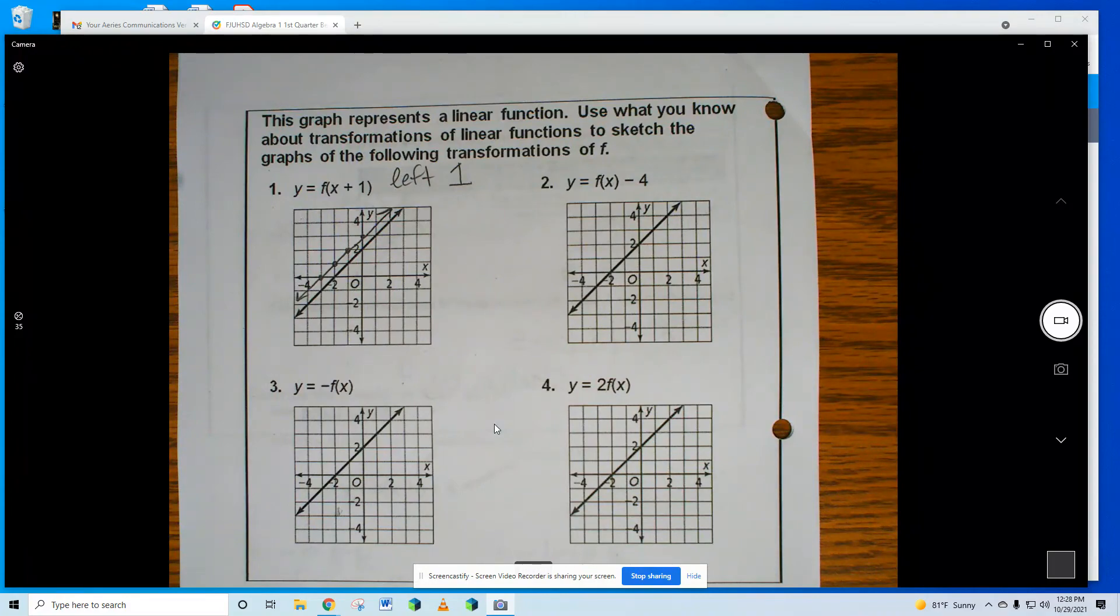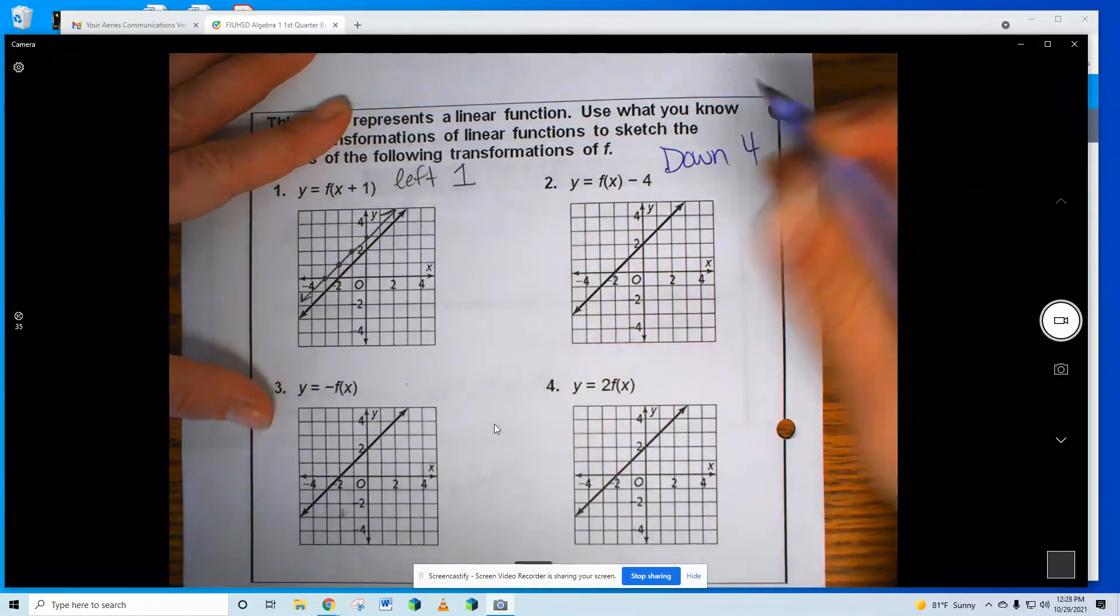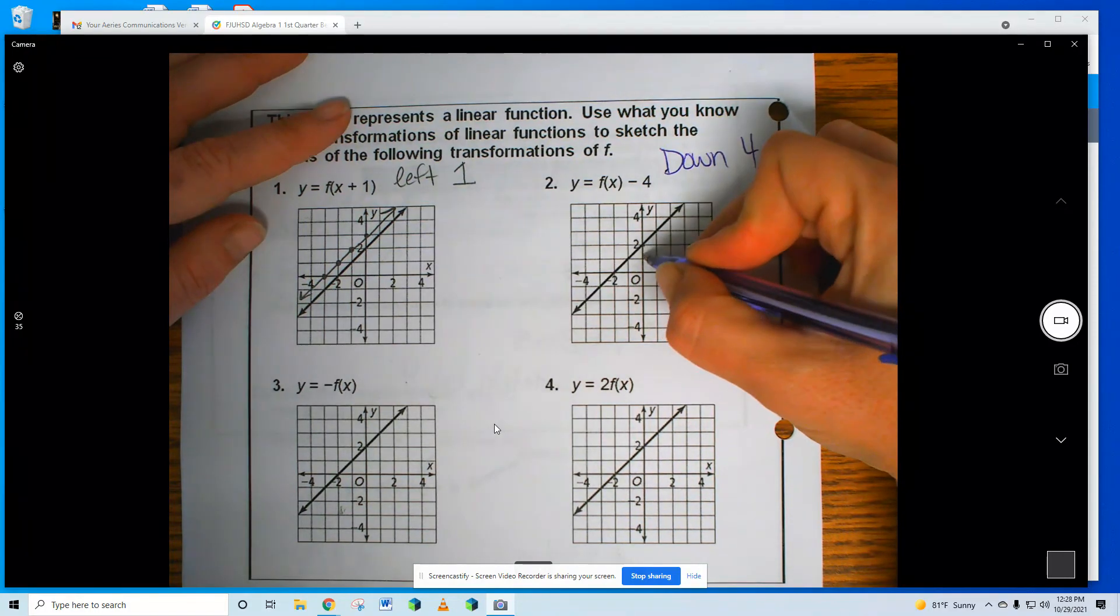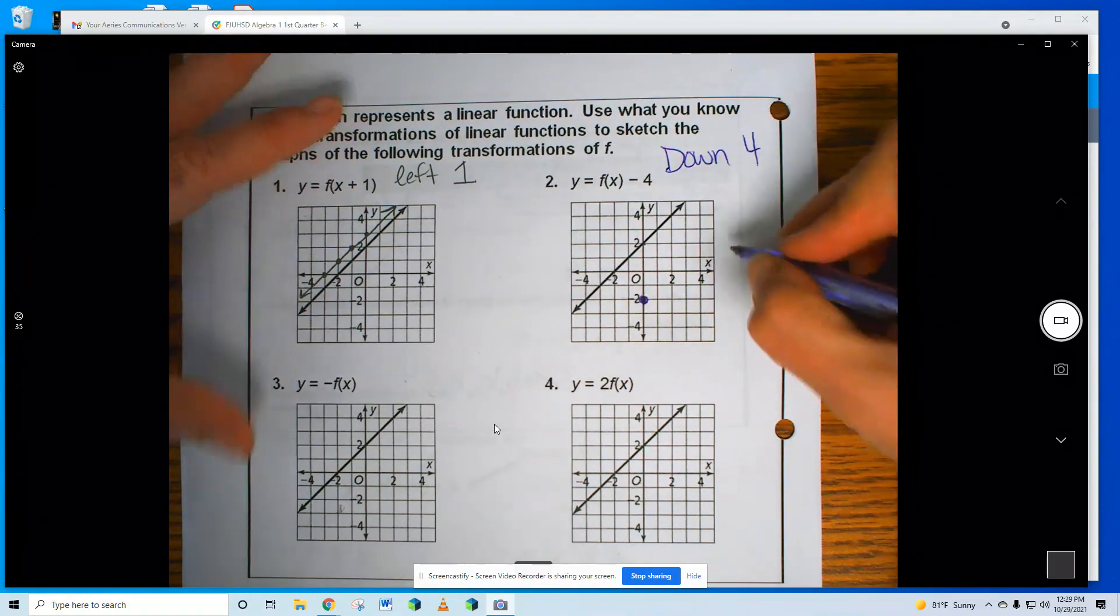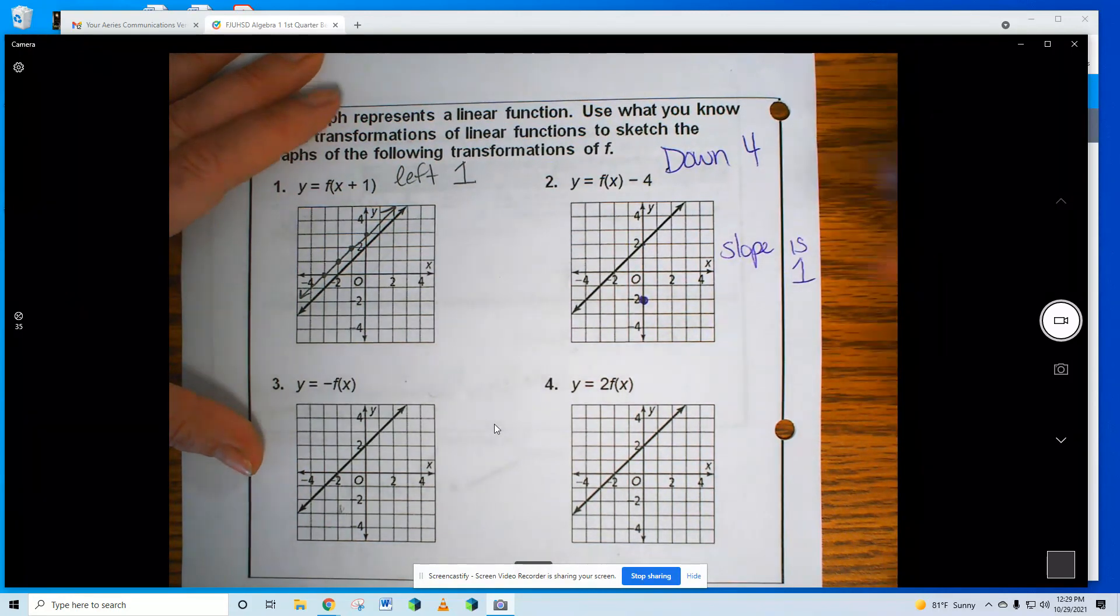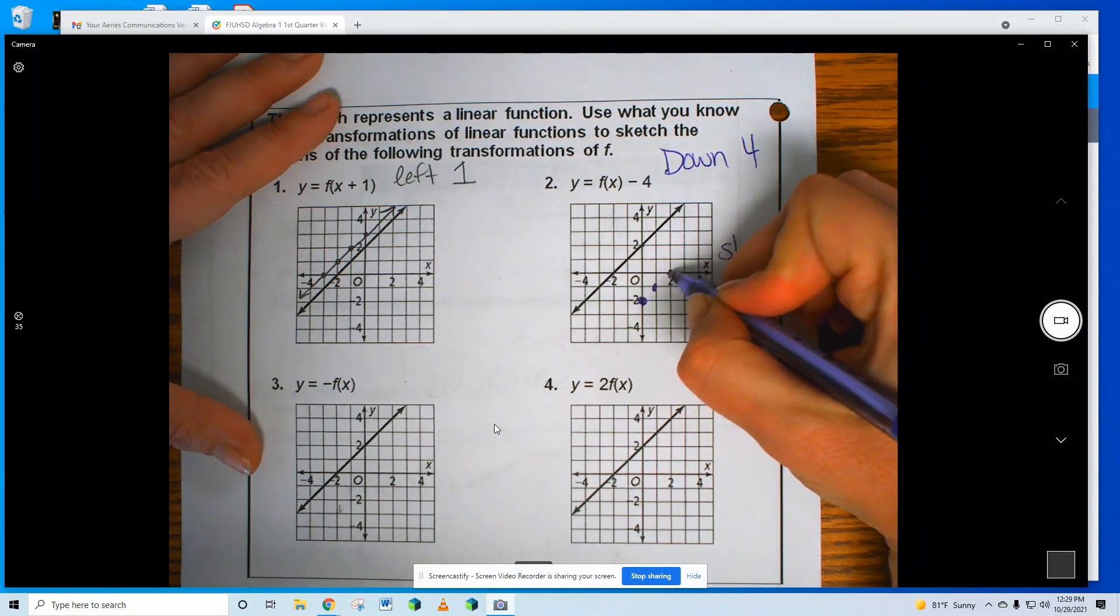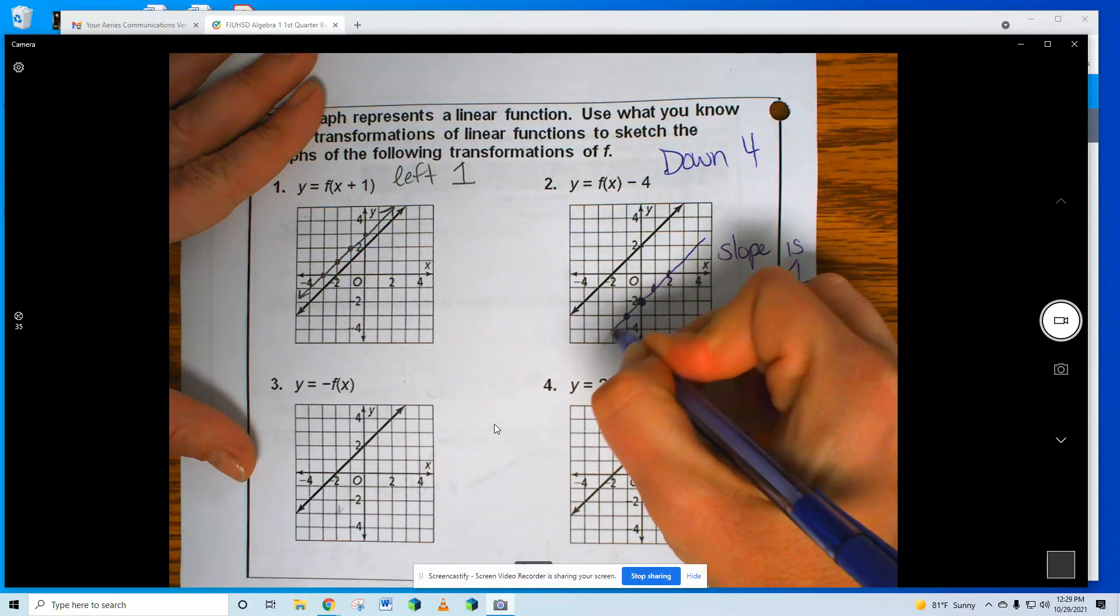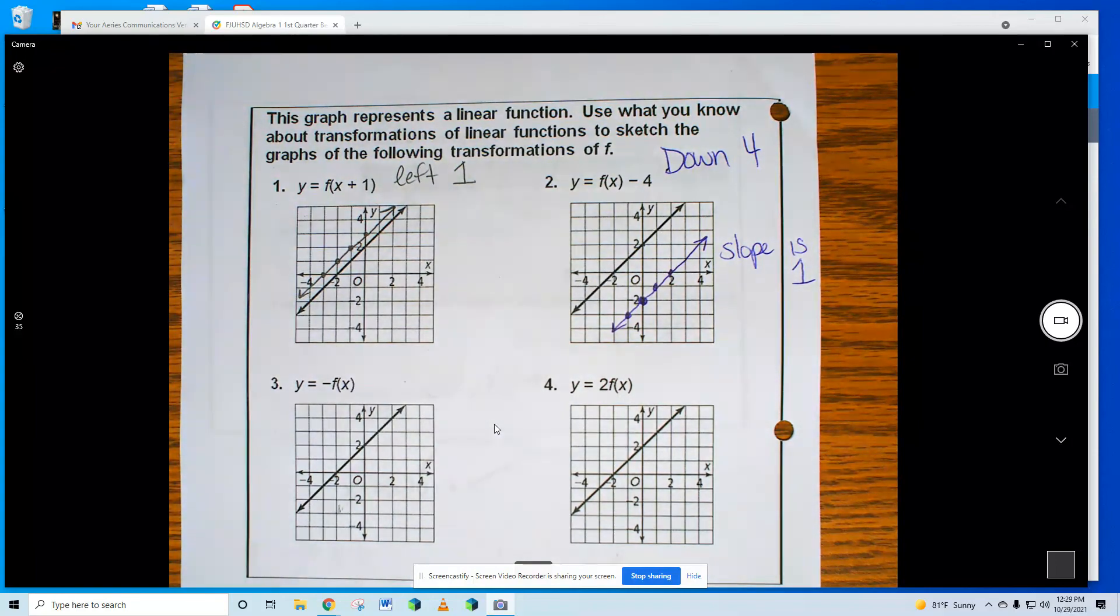Number 2: it says minus 4. What does that mean, minus 4? Down 4, down 4. From my original, I'm going to go down. This is my y-intercept, I started with. Go down 4: 1, 2, 3, 4. But my slope is still 1, because that's what it was to start with. Up 1 over 1. The whole line is just going to be shifted down 4. My slope is 1.